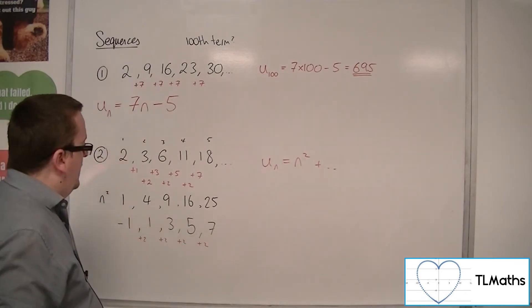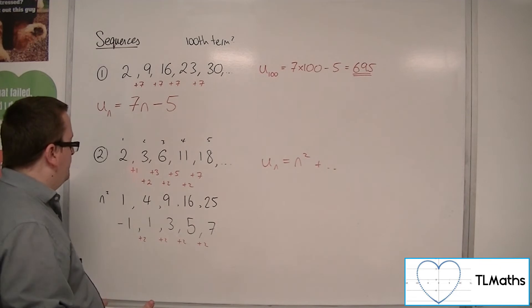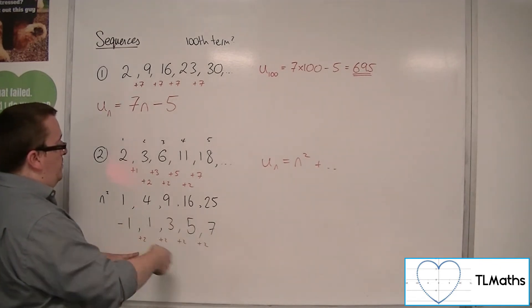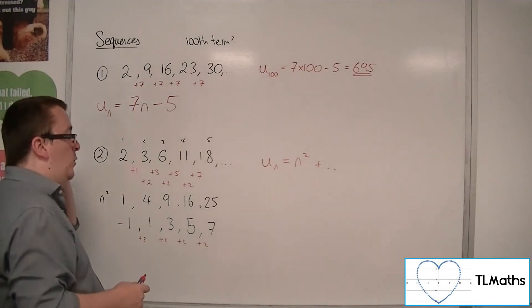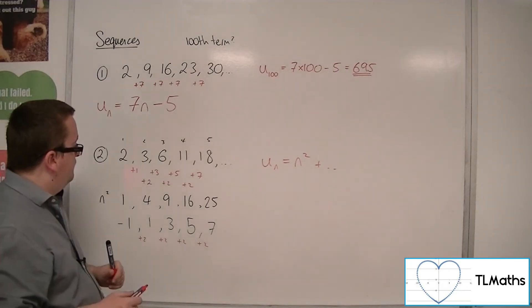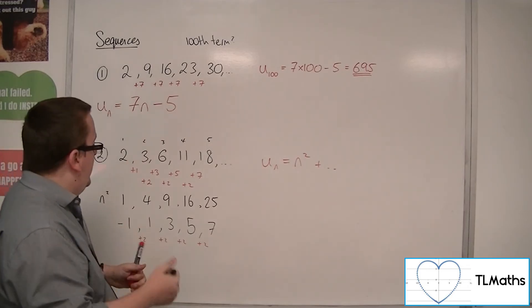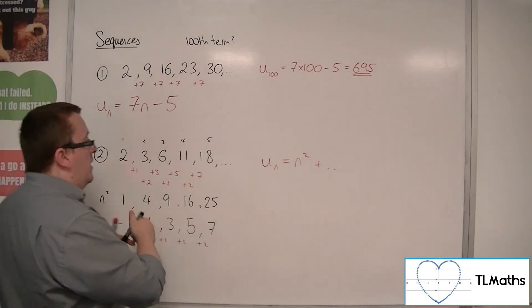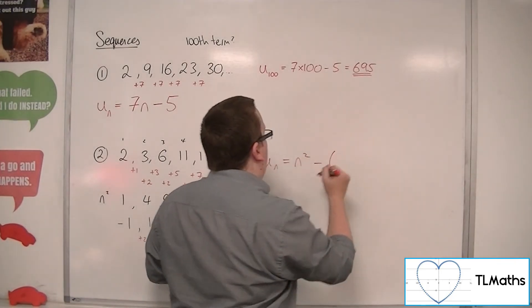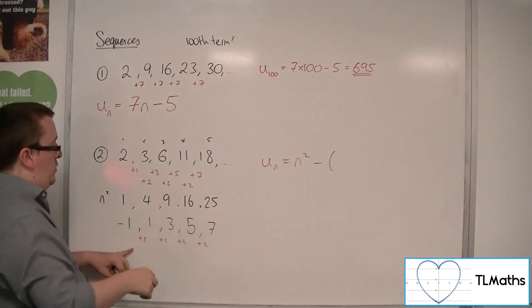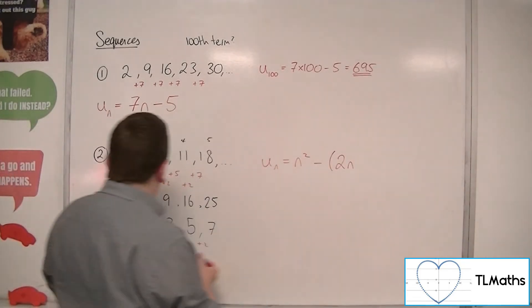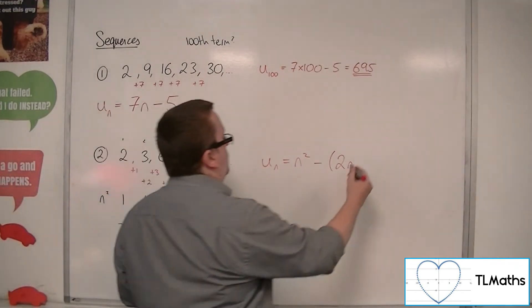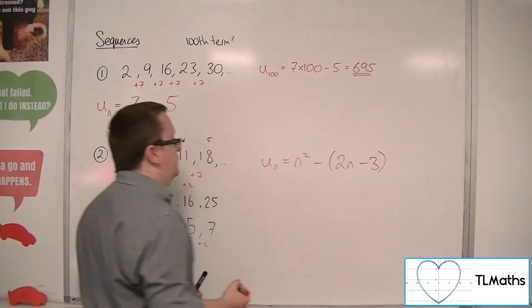This guy here has itself an nth term, and the nth term for this sequence would be 2n, and then take away... how do we get from 2 back to minus 1? We've got to take away 3. So we did the n squared, take away the nth term for this sequence. So we've got 2n, and it was 2 to get to minus 1, we had to take away 3.